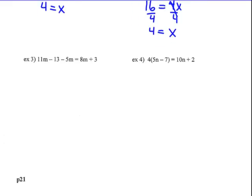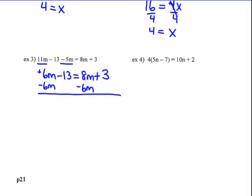Example number 3. I don't have the distributive property, but I do have combine-like terms — step 2 above. Combine-like terms comes before moving the variable to one side. So I have 11 m's take away 5 m's, that's 6 m's. Bring down the negative 13 equals 8 m's plus 3. What's smaller: 6 m's or 8 m's? 6 m's. So I'm going to do the opposite of this positive 6m and subtract 6 m's on both sides. And you get negative 13 on the left equals 8 m's take away 6 m's, which is 2 m's plus 3.